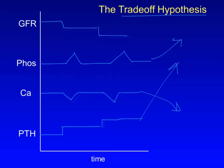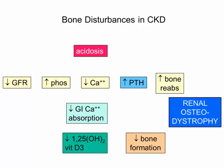So this is part of the story of CKD bone disease. Now let's look at the bigger picture. Here's the trade-off hypothesis with a decrease in GFR producing that small increase in serum phosphate, decrease in calcium, and increase in PTH. We now know that an increase in phosphate suppresses synthesis of 1,25-dihydroxyvitamin D3 and impairs GI calcium absorption, leading to hypocalcemia. 1,25 production is also suppressed by renal disease itself, which damages and scars the proximal tubular cells where 1,25 is made.